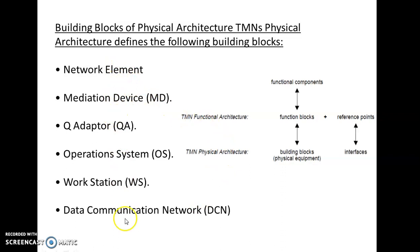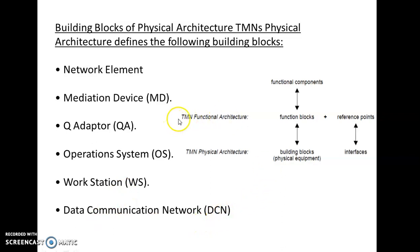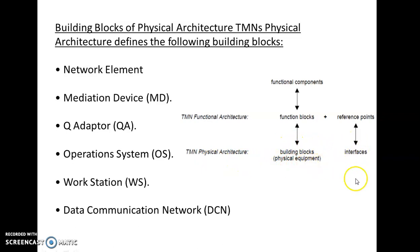In the Physical Architecture, the required components or building blocks include: network element, mediation device, Q adapter, operation system, workstation, and data communication network. In the Functional Architecture we build functional blocks and reference points; in the Physical Architecture we build the physical equipment and actual interfaces between them.